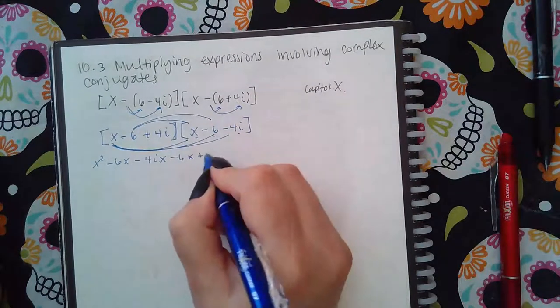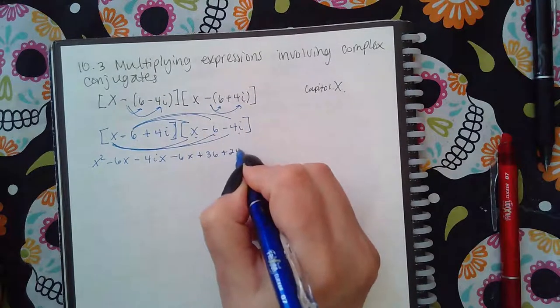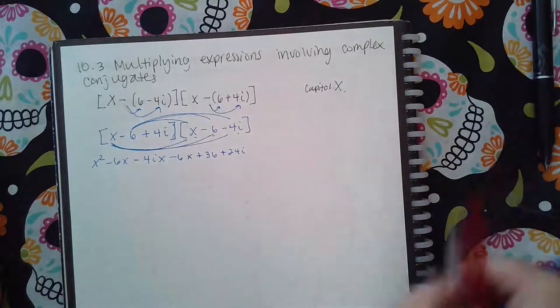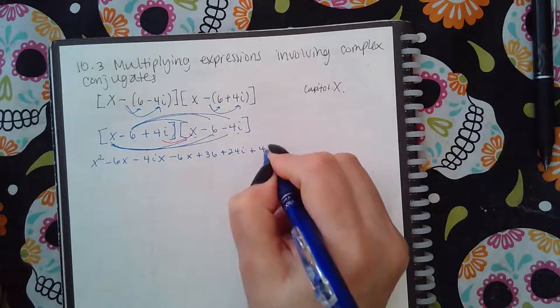And then that's positive 24i, and then finally this guy, so we get positive 4iX.